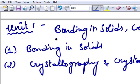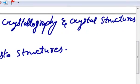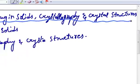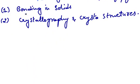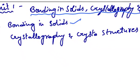Unit 1 Bonding in Solids, Crystallography and Crystal Structures. This unit is divided into two major topics. They are bonding in solids, the second one is crystallography and crystal structures.